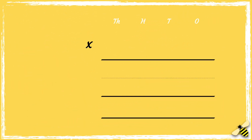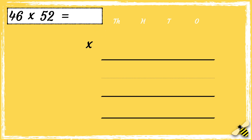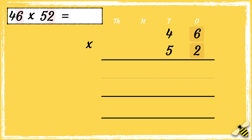Let's have a look at one more: 46 multiplied by 52. 46 has four tens and six ones, and 52 has five tens and two ones. Now that we're set up, we're ready to multiply. First we multiply two by six — two times six is twelve. We can drop the one ten below in the tens column.